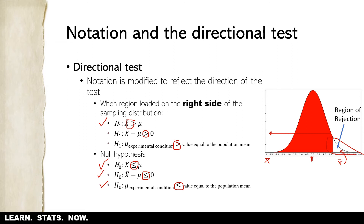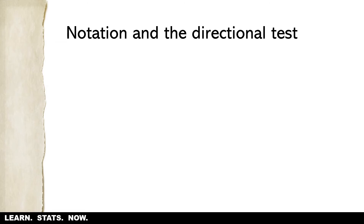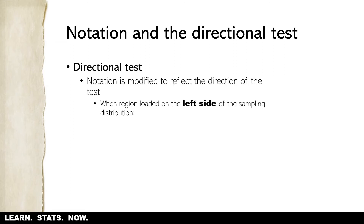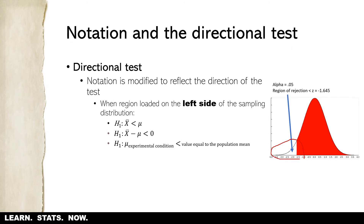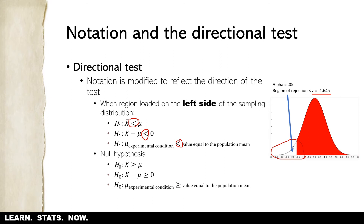If we flip the region of rejection to the other side of the sampling distribution, exactly what you'd expect happens — we simply reverse those signs. If we load everything onto the left side of the distribution, we need a z-score less than negative 1.645. The operators for the alternative hypothesis and null hypothesis now flip to go in the opposite direction compared to the right-tailed case.